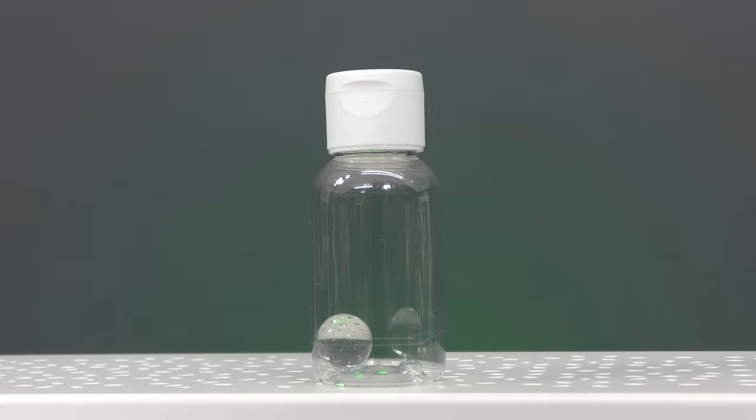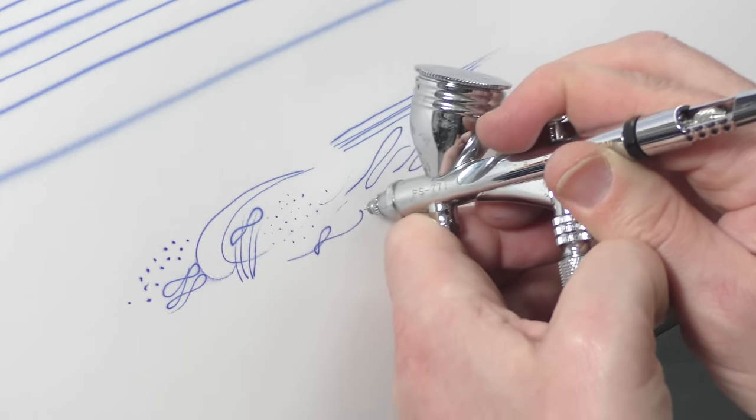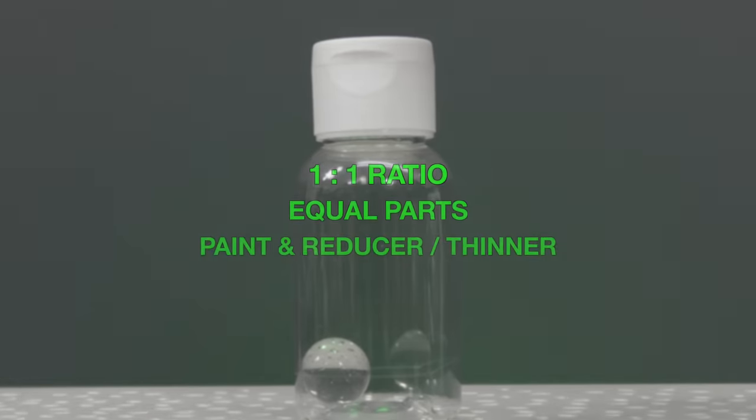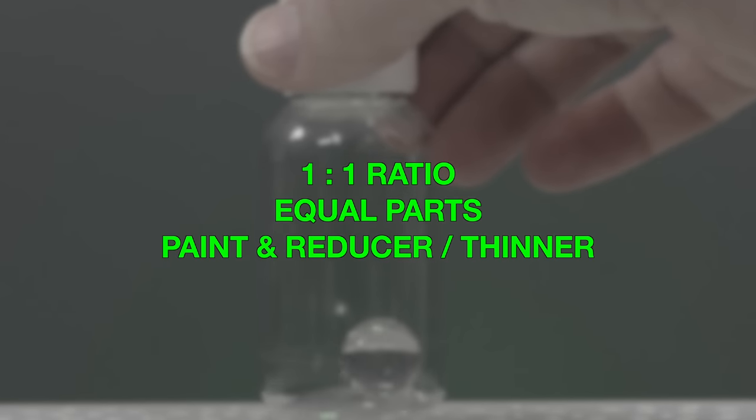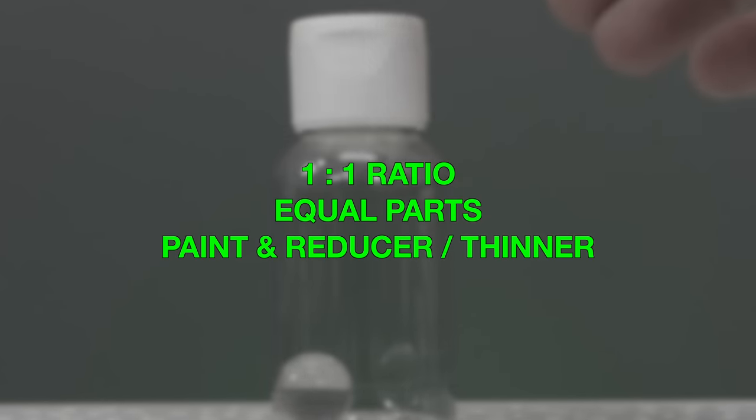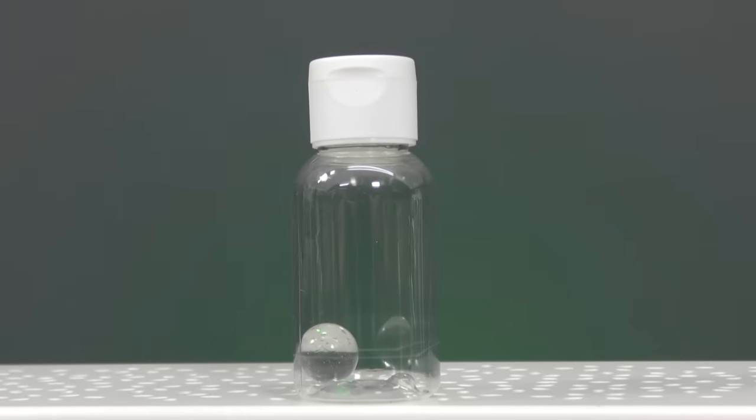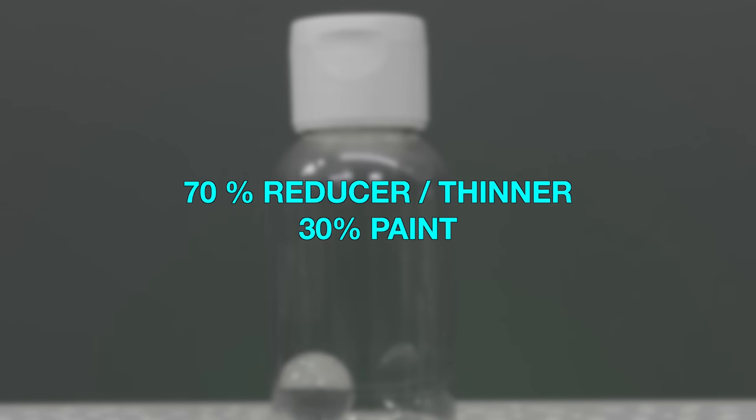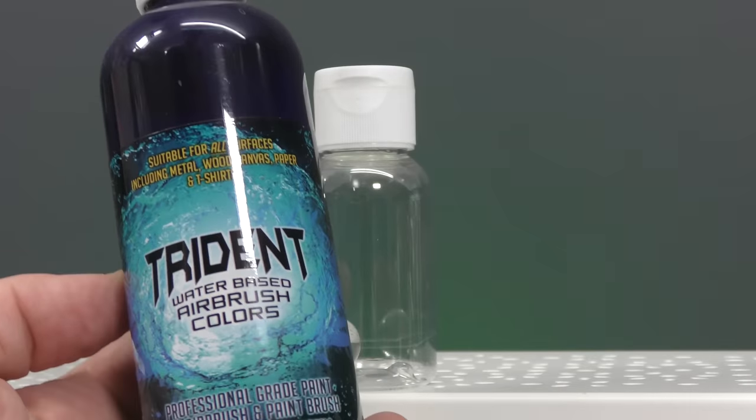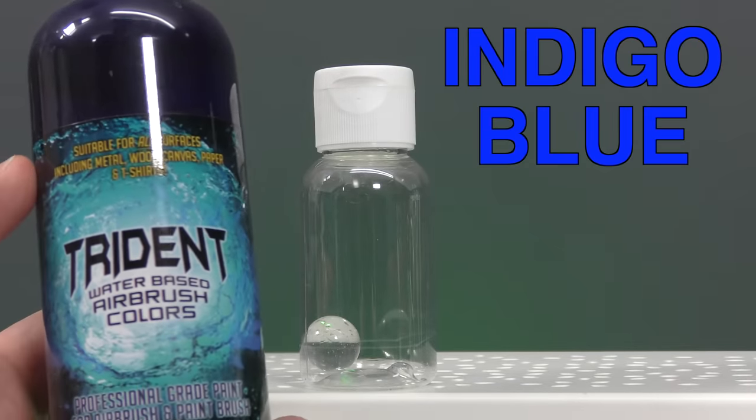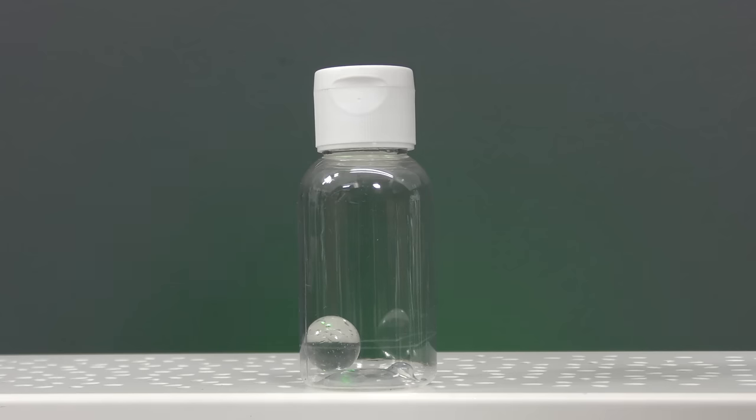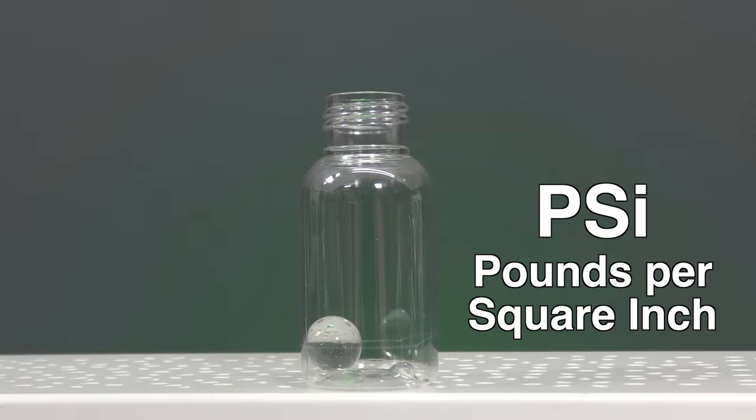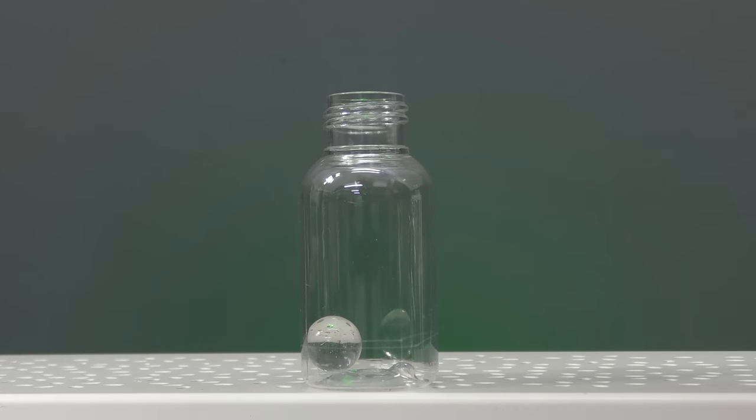The first thing I want to do in order to get my paint ready for fine lines is experiment with two different mixes. The first one will be a one-to-one ratio, equal parts paint and reducer or thinner. The second one is 70% reducer, 30% paint mix for fine detail. The paint I'm using is Trident water-based airbrush colors in indigo blue. The one-to-one ratio will run at about 30 PSI.